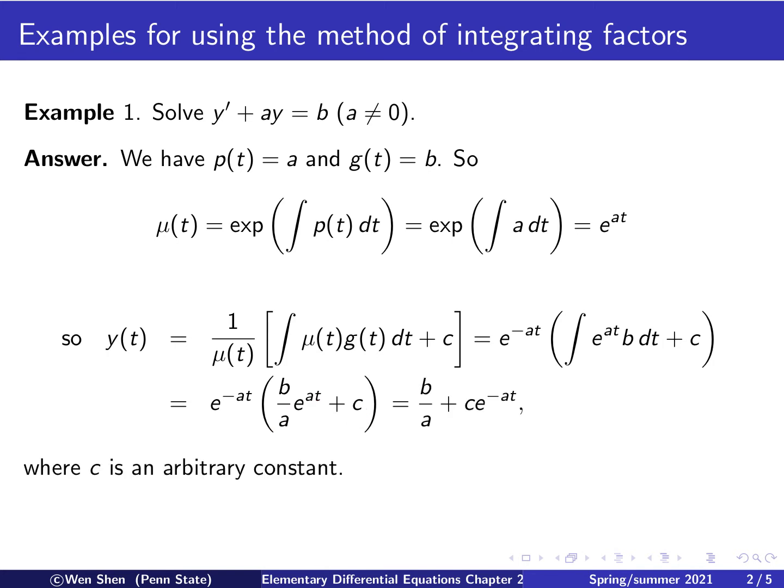We can distribute this factor into two terms. If I multiply e to the negative at on e to the at, I get 1, so I just get a term b over a, and then a second term c times e to the negative at. This is the general solution, which contains an arbitrary constant c.